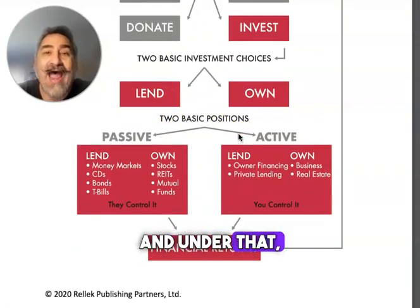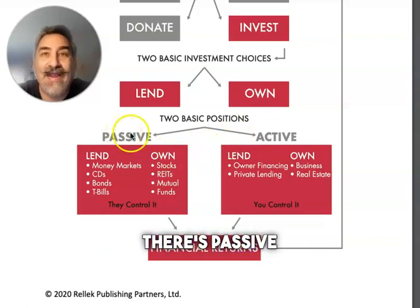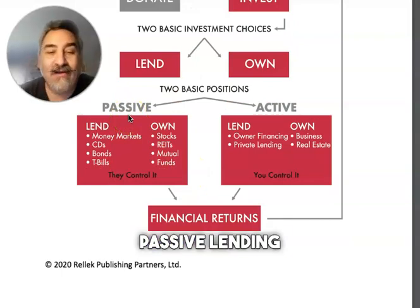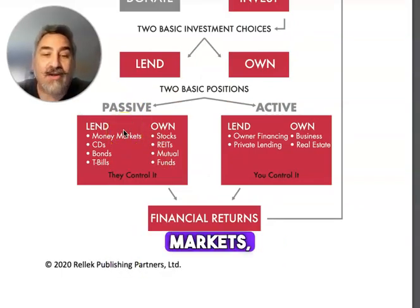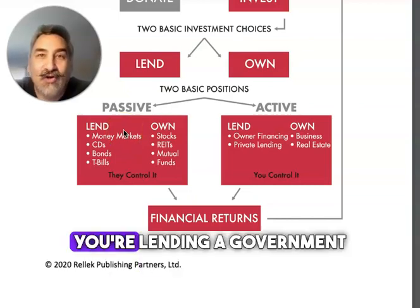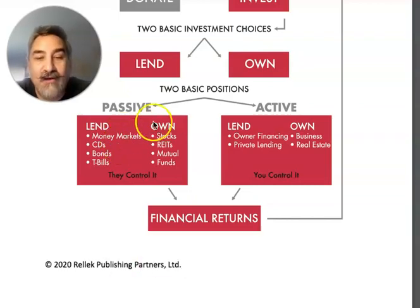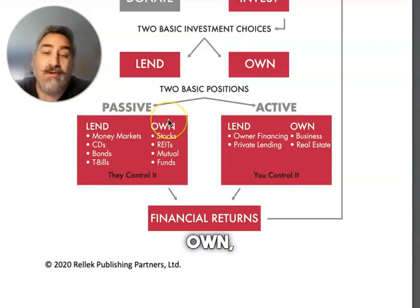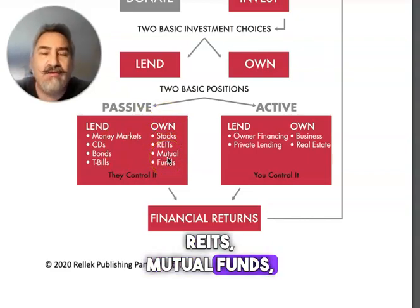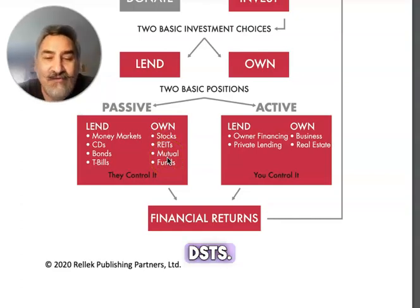Under that, there's two things: passive and active. Passive lending would be things like money markets, CDs, bonds — you're lending a bank your money, you're lending a government your money. On the ownership side, passive would be stocks, REITs, mutual funds, DSTs.